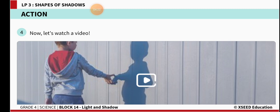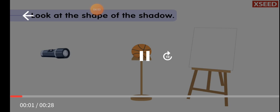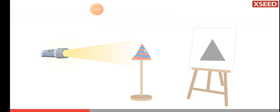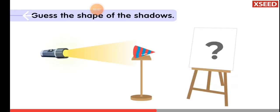When light falls from the top, the shadows appear shorter. When light falls from the left or right side, the shadows appear longer. You can see in this video how the shadow shapes change based on the light. Let's look at the shape of the shadow the ball makes. The shapes of the shadows of the cap and the pencil box are different. If light falls on objects from different directions, the shape of the shadows may also change.